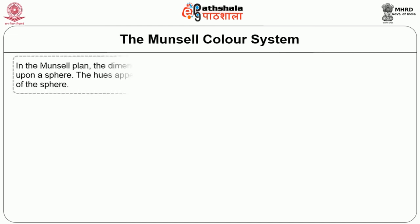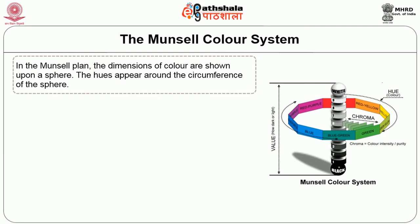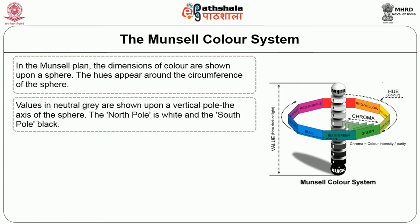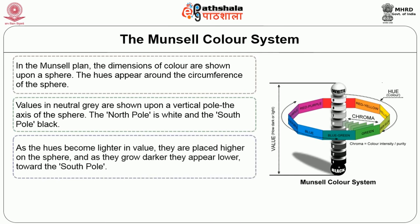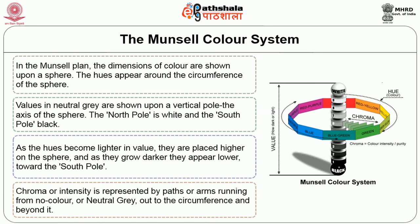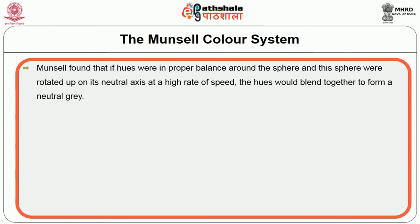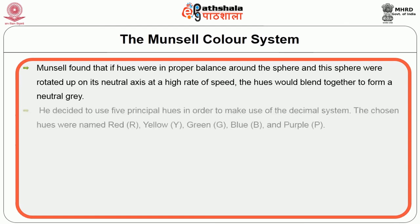The Munsell color system. In the Munsell plan, the dimensions of color are shown upon a sphere. The hues appear around the circumference of the sphere. Values in neutral gray are shown upon a vertical pole — the axis of the sphere. The north pole is white and the south pole is black. As hues become lighter in value they are placed higher on the sphere, and as they grow darker they appear lower toward the south pole. Chroma or intensity is represented by paths or arms running from neutral gray out to the circumference and beyond. Munsell found that if hues were in proper balance around the sphere and the sphere were rotated at high speed, the hues would blend together to form a neutral gray.